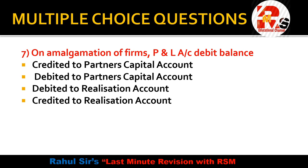Question 7: on amalgamation of firms, profit and loss account debit balance is — credited to partners' capital account, or debited to partners' capital account, or debited to realization account? The concept is simple: a P&L debit balance means miscellaneous expenditures or accumulated losses. A P&L credit balance would be a reserve, but a debit balance is an accumulated loss. Therefore it goes to the debit side of the partners' capital account. If it were a P&L credit balance, it would go to the credit side of the partners' capital account.